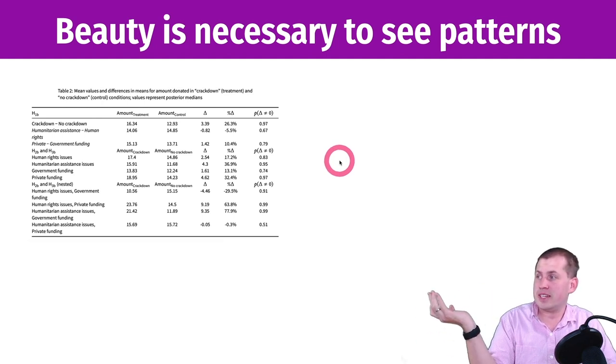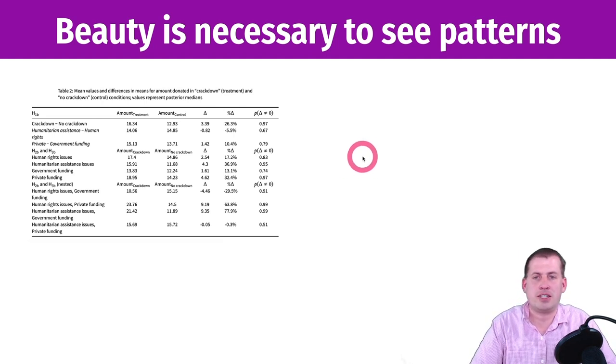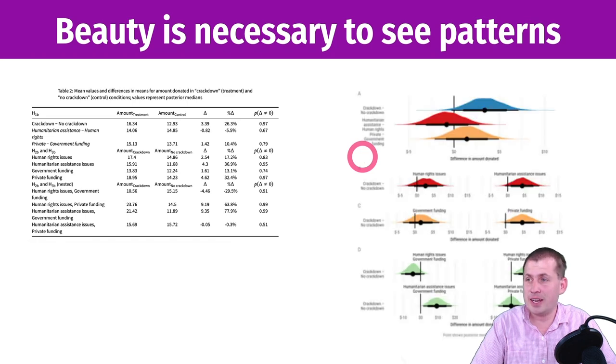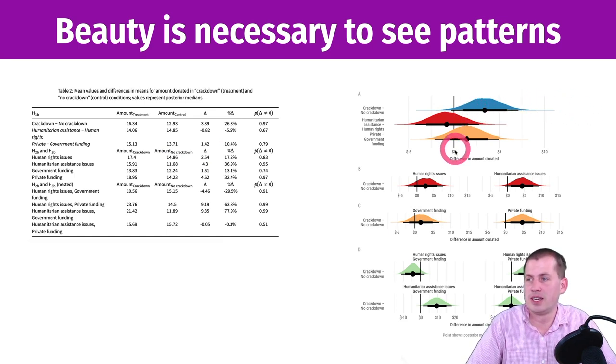And good luck finding the effect in there. But that's what academics do—they just stick that in there and say 'the effect's there, good luck.' Instead, this plot right here has the same information as this table. It's exactly the same—it's just these numbers are mapped onto the different plots here. And this is actually way more interpretable.